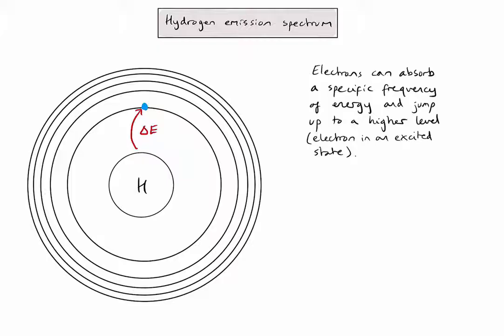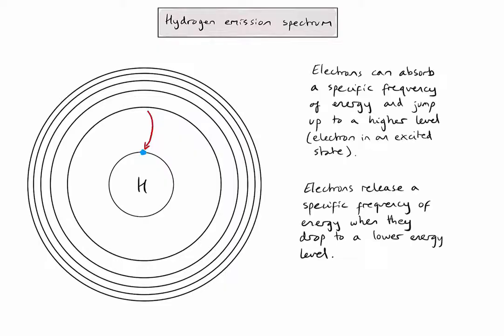Conversely, when that electron drops back down to the first energy level, according to the conservation of energy, it must release that exact same amount of energy. Of course, because there are lots of different energy levels, the electron could jump up to the second, third, fourth, fifth energy level and so on, and can also drop back down to any of the lower levels — which means there are a number of possible transitions that can occur.